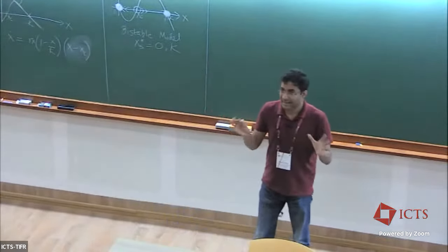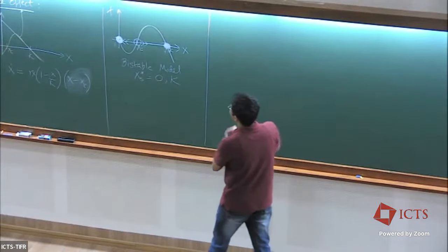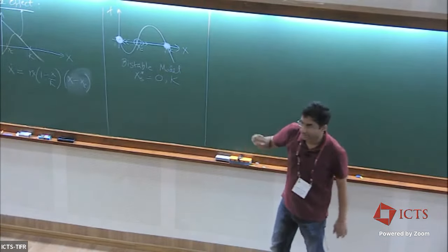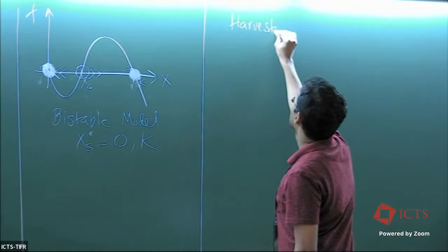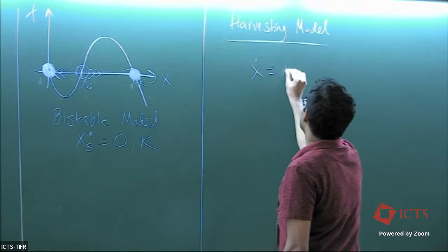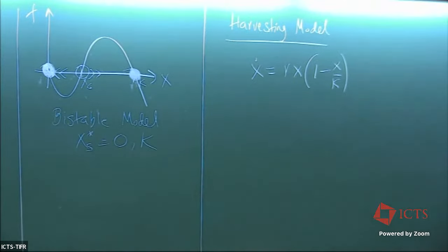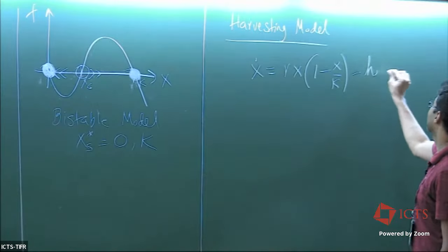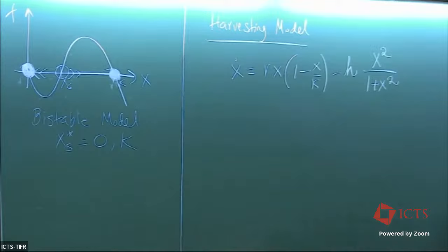Going back to the mathematics: one question we were interested in is how do we think about anticipating these transitions. Let's quickly recap the harvesting model that Partho introduced. We continue to assume baseline population dynamics are governed by the logistic model, but it also had this additional non-linear death term.